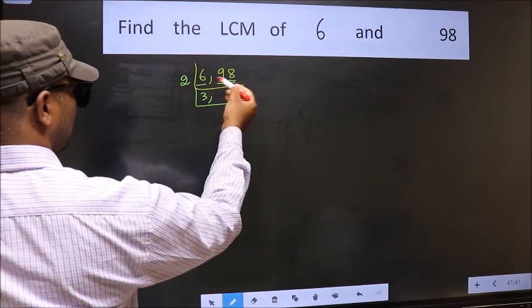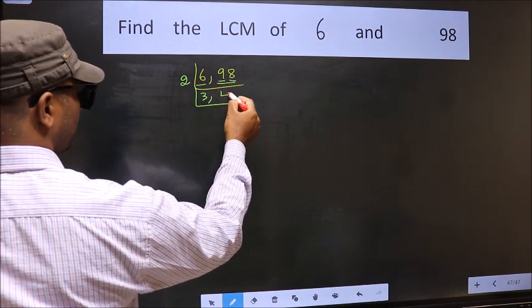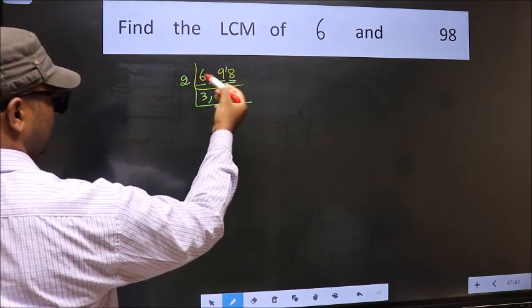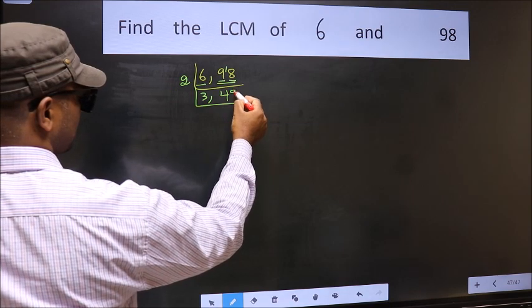First number 9. A number close to 9 in 2 table is 2, 4, 8. 9 minus 8, 1, 1, carried forward 18. When do we get 18 in 2 table? 2, 9 is 18.